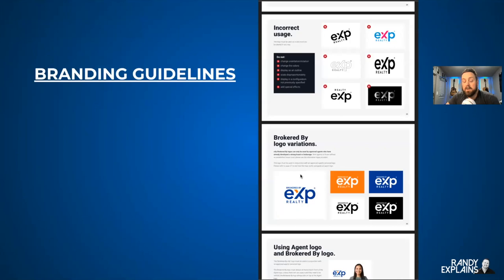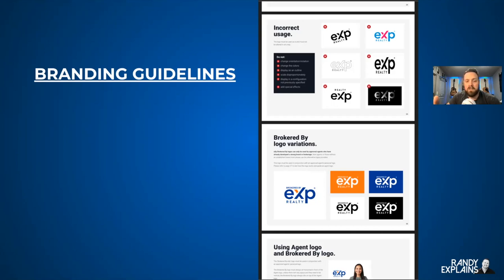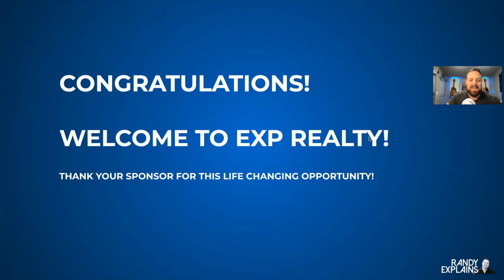Branding guidelines — now that you're here, you're probably going to want to know how to get the logo. Click there and it'll tell you what to do and what not to do. You can't change the color, you can't squash it, you can't do an outline, you can't do a gradient — there's a bunch of things you can't do. Remember this is a trademarked logo, so you can't just change it. Check those guidelines out.